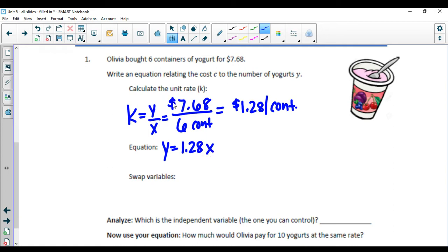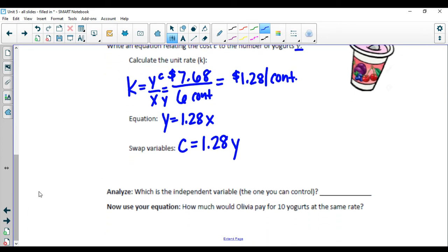Y represents our money, which here is actually c. And x represents our yogurts, which here we're going to represent with y. So we're going to swap out variables. Instead of the y in our original equation, we're going to swap that with the letter c. The 1.28 stays, and the x is now going to become y to represent the yogurts from the problem.